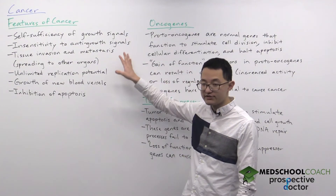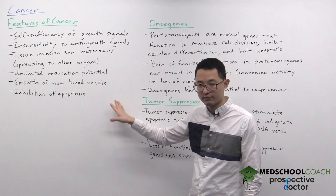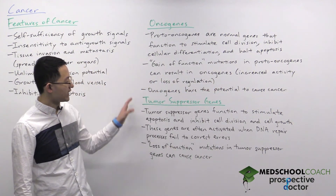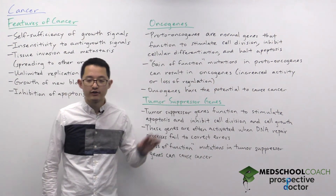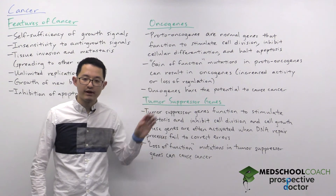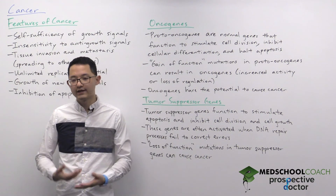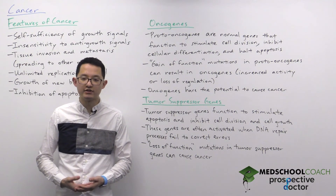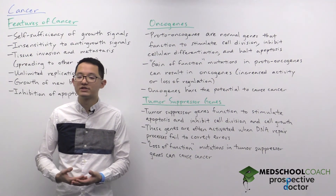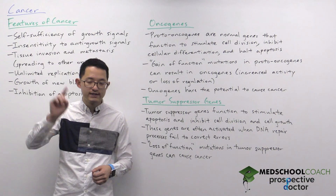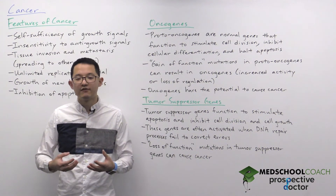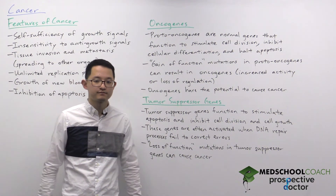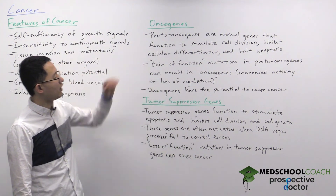Those are the different features of cancer to be familiar with. Now let's talk about oncogenes and tumor suppressor genes. All cancer is ultimately caused by DNA mutations, originating from a single cell. You only need one cell to become cancerous for it to form a large tumor. We'll start first with oncogenes.